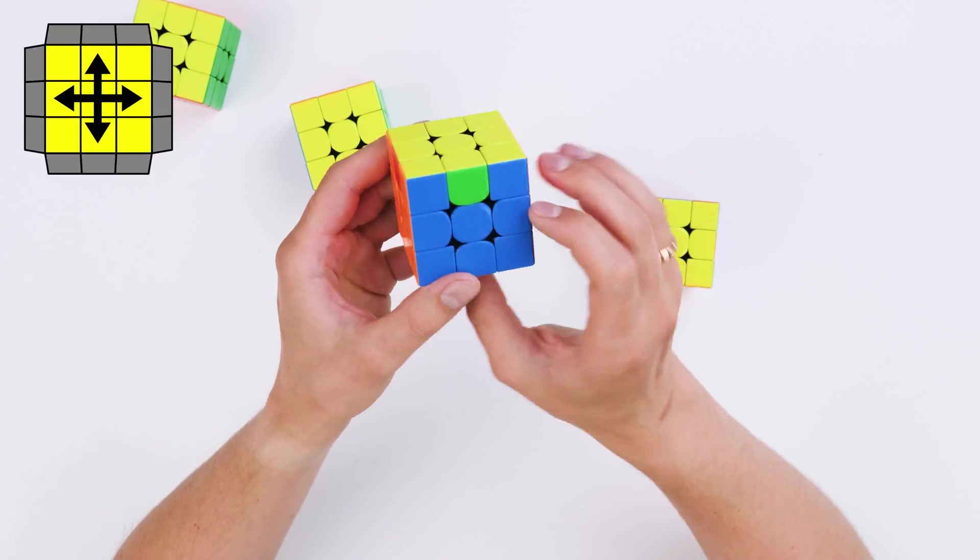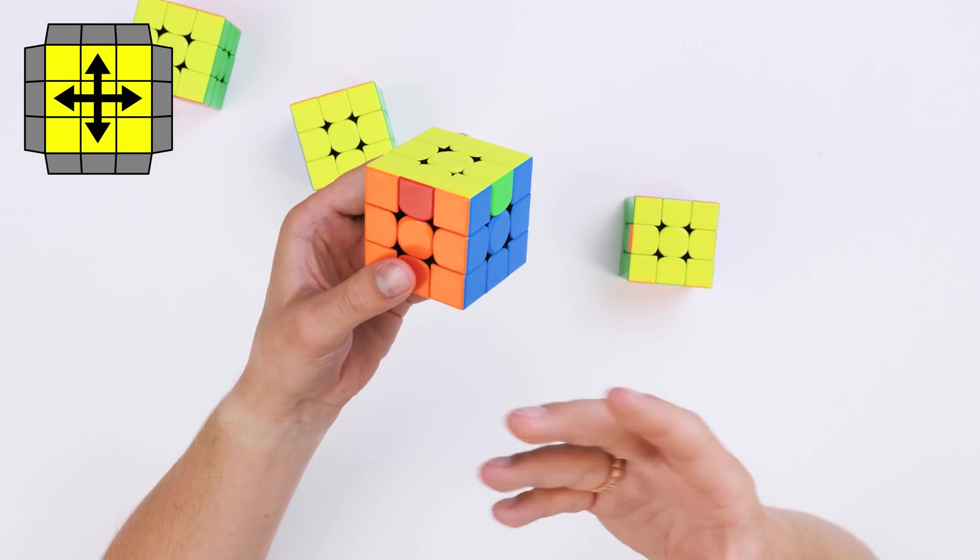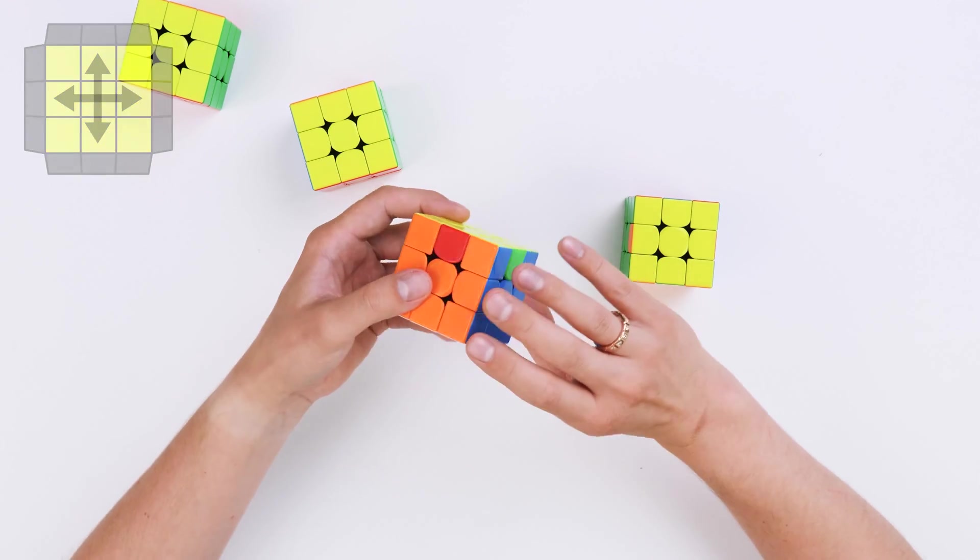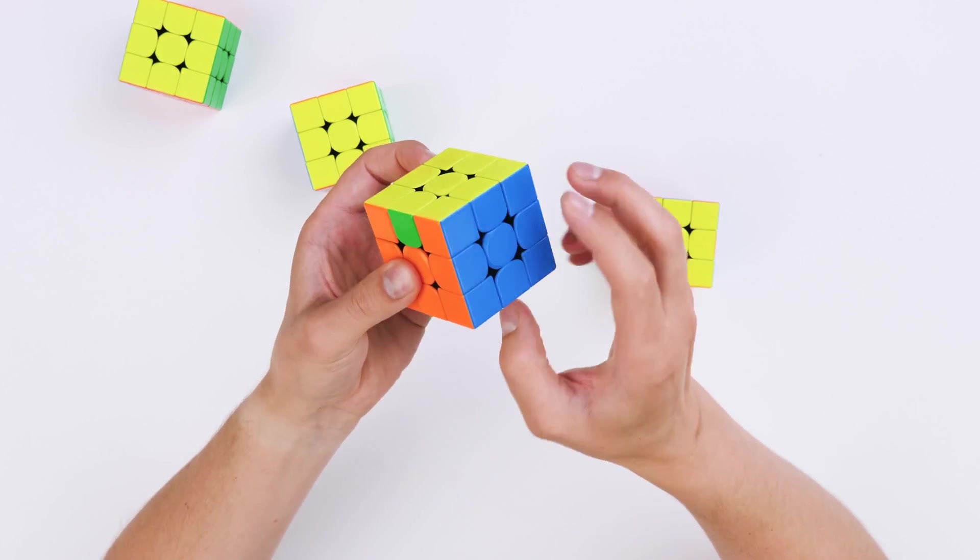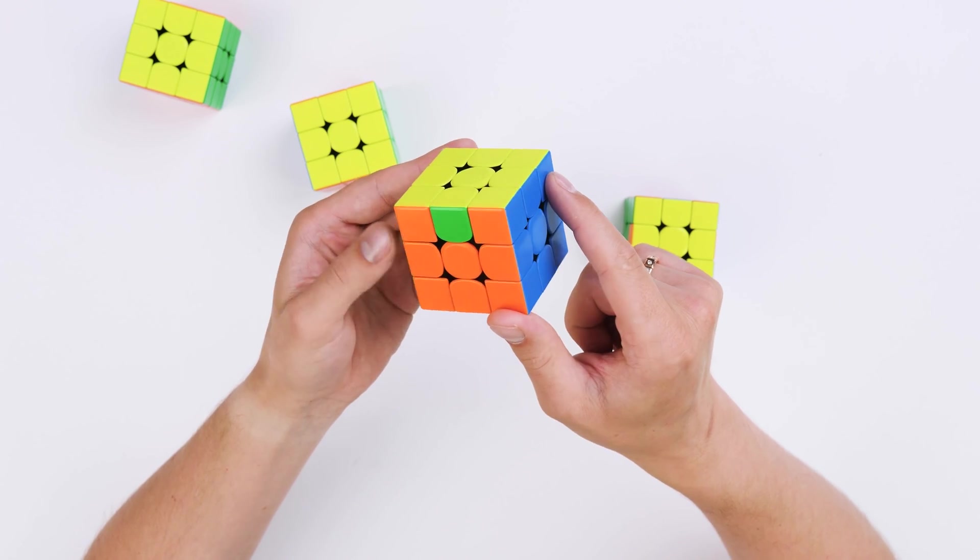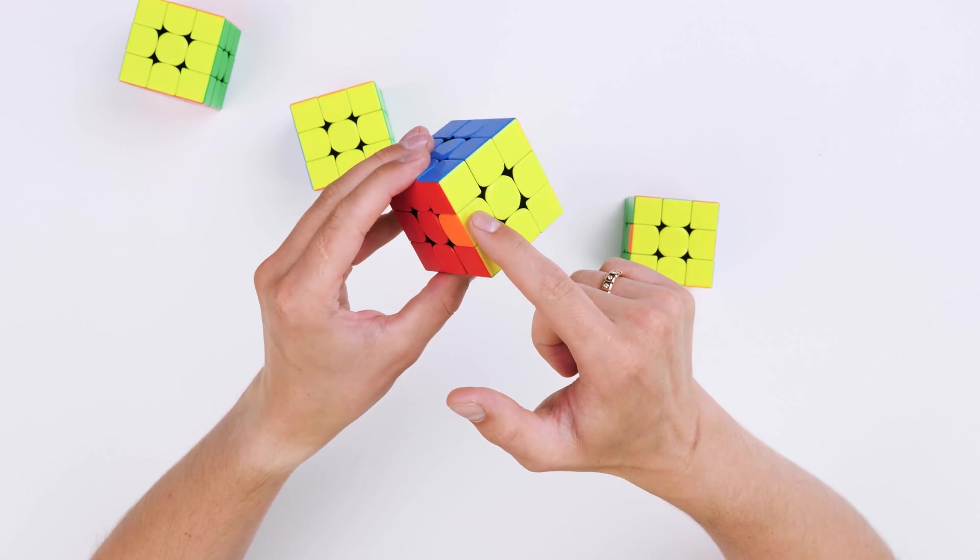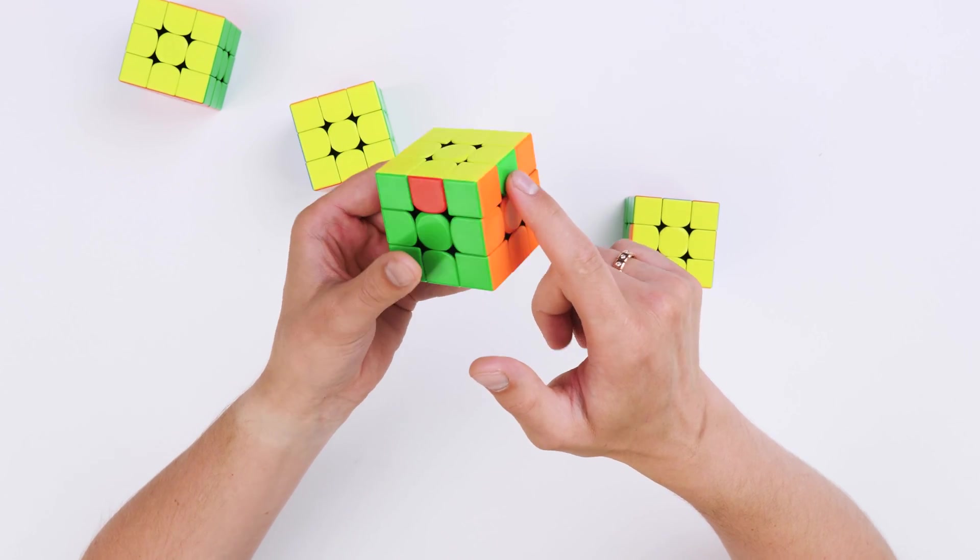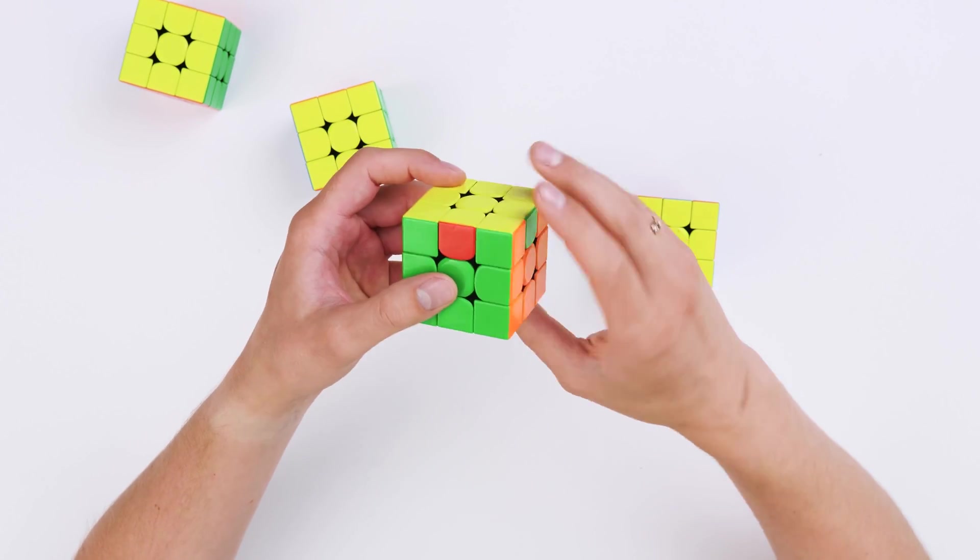Or we may have a situation where we have no assembled block on either side. Then we just make our U-perm from either side. And then we have a situation with assembled block and three parts that need to be moved clockwise. Green to green, red to red, orange to orange. Here we need one more U-perm.